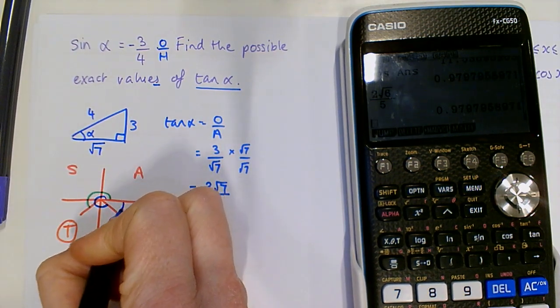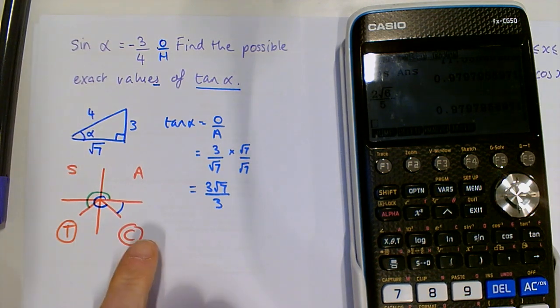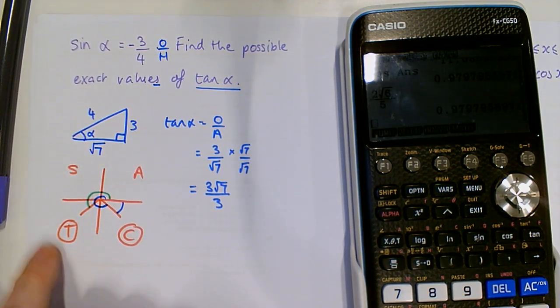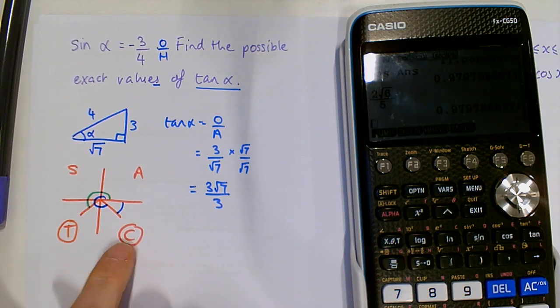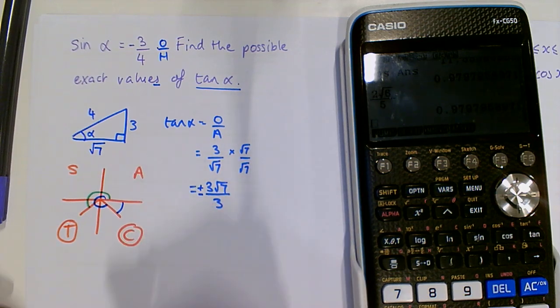Or in fact, we could have the negative angle and so on. But whatever. We want to find out what tan is. We know that tan would be positive here but negative there. So we actually get two different solutions. We get plus or minus 3 root 7 over 7.